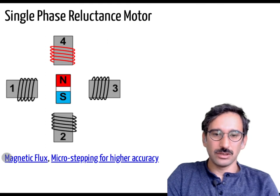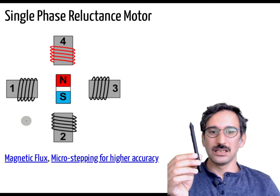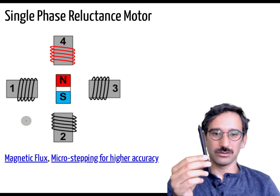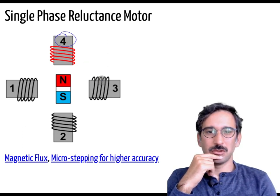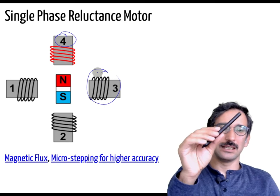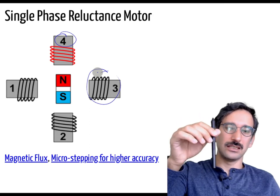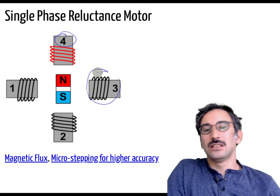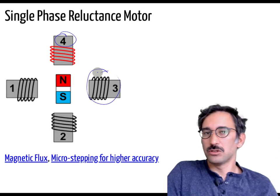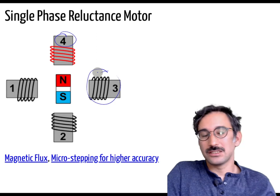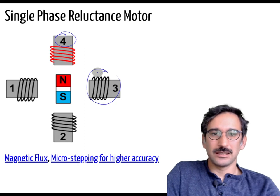This is essentially a single-phase reluctance motor. For higher angular accuracy, you can excite two adjacent coil sets simultaneously — for example, coils four and three together to align at 45 degrees, then coil three alone, then coils two and three together, and so on. This is exactly the idea behind stepping motors, used in 3D printers and other high-accuracy systems.